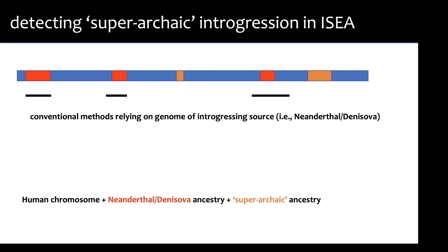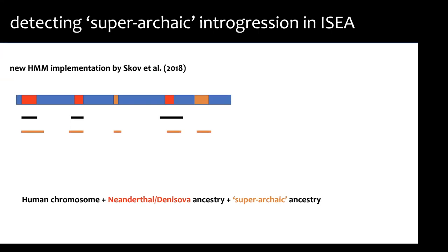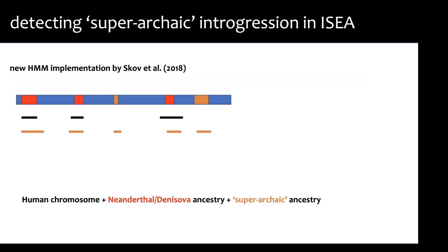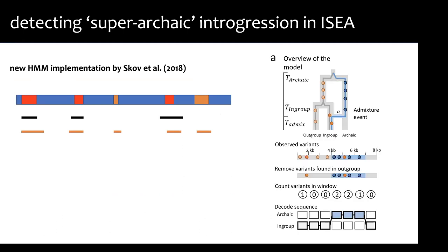Conventional methods to detect introgression — admixture events between Neanderthals or Denisovans and modern humans — use the known genetic information from those archaics, compare it to modern humans, and ask whether bits of archaic DNA appear in the modern human genome. But if we don't have information for potentially other sources, we need to be more creative. There was a new statistical implementation from 2018 by Laurent Skov, developed in Copenhagen and later Leipzig, that is agnostic to the introgressing source.